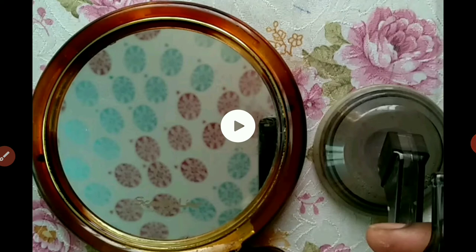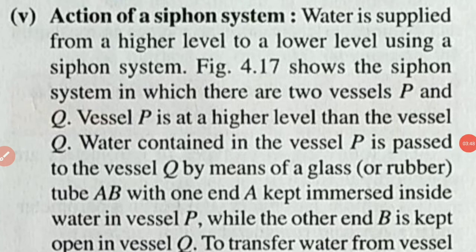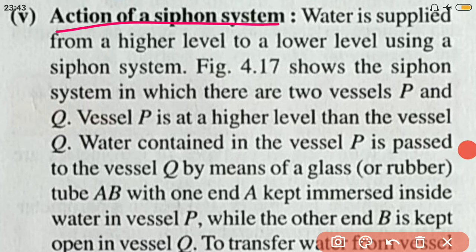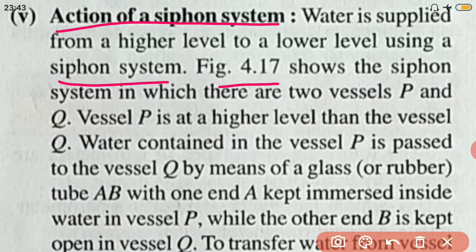The fifth consequence is the action of a siphon system. A siphon is a mechanism by which liquid can be transferred from a higher level to a lower level using a rubber tube or pipe. Figure 4.17 shows a siphon system with two vessels P and Q, where vessel P is at a higher level. Water from vessel P is passed to vessel Q by means of a glass or rubber tube A-B, with end A immersed in vessel P and end B open in vessel Q.